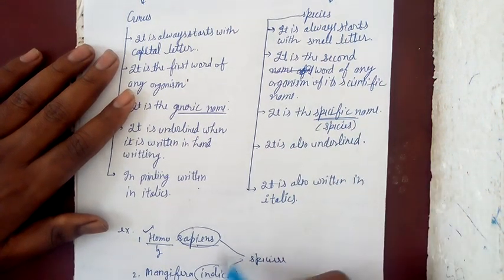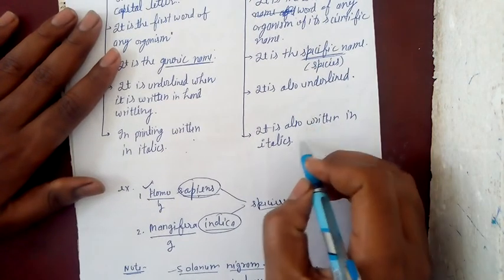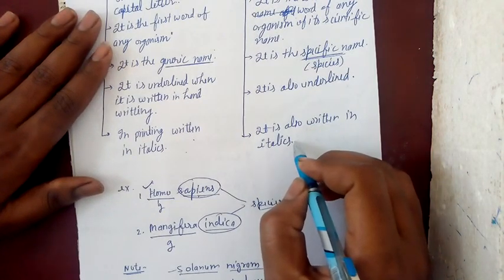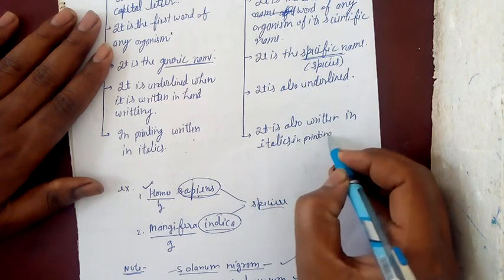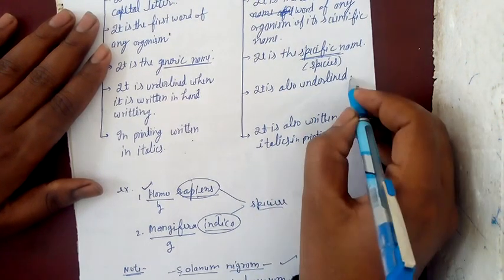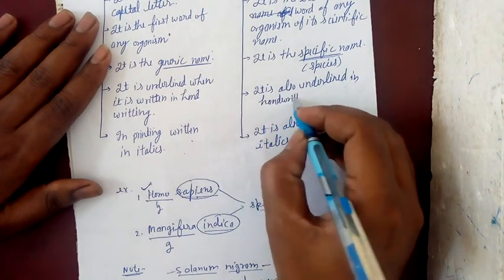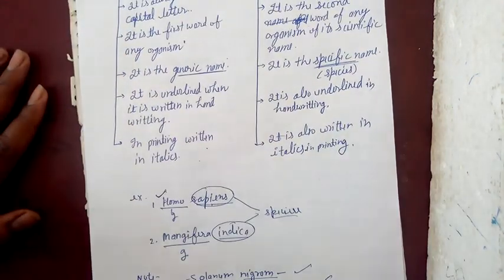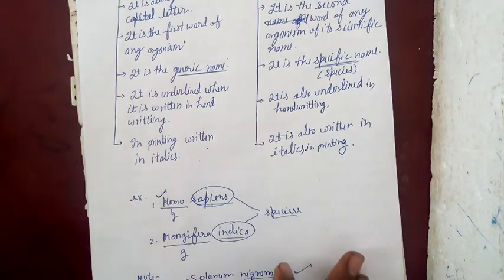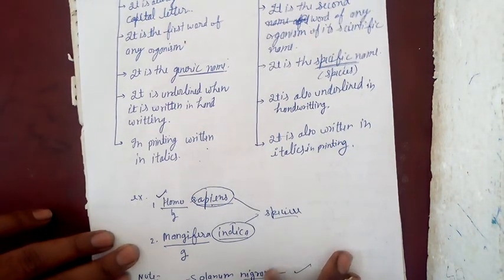It is also underlined and also written in italics in printing, underlined in handwriting. Now we will study taxonomical hierarchy.